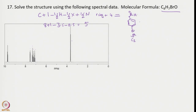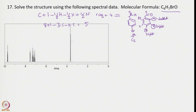Let us consider the ortho-bromo structure. In the ortho-bromo compound, all 6 protons are different and non-equivalent. Examining the coupling pattern: one hydrogen coupled equally to two neighbors gives a triplet, and similarly other hydrogens give triplets and doublets. This matches our observed spectrum — two triplets, two doublets — confirming the compound is ortho-bromobenzaldehyde.